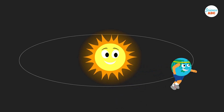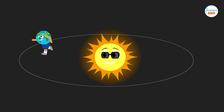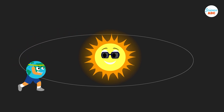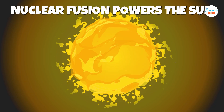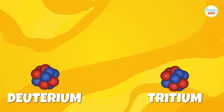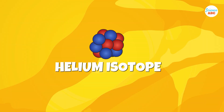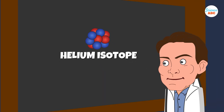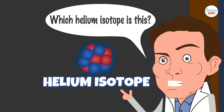Nuclear fusion is a process that occurs in the core of the sun and other stars — a process that powers them and will continue to do so for billions of years. During this process, two isotopes of hydrogen combine under extremely high pressure and temperature conditions to form a helium isotope. Brownie points to you if you can tell us in the comments which helium isotope is formed in the sun.